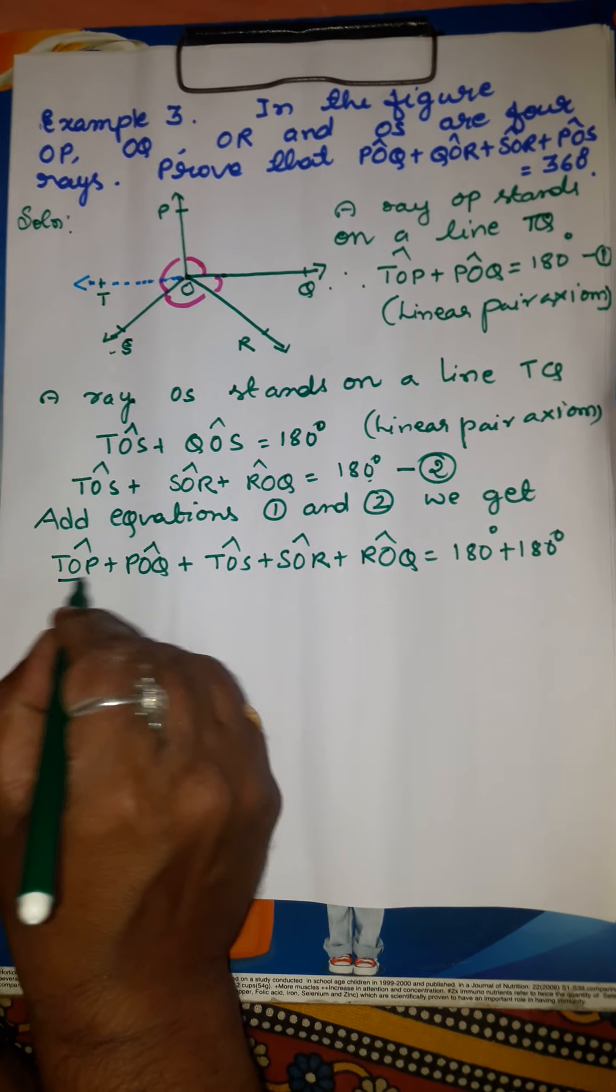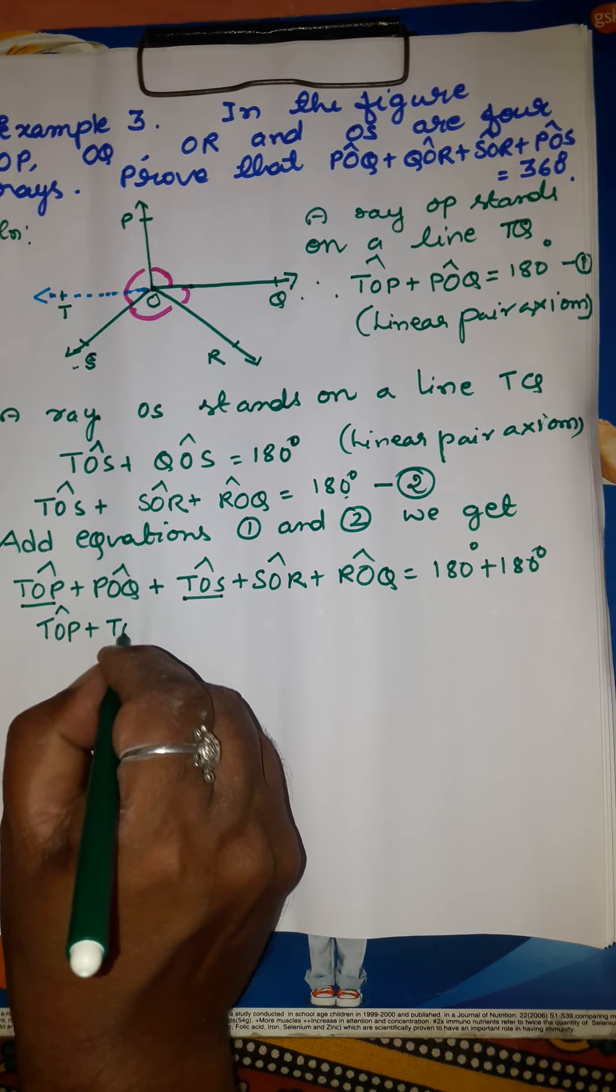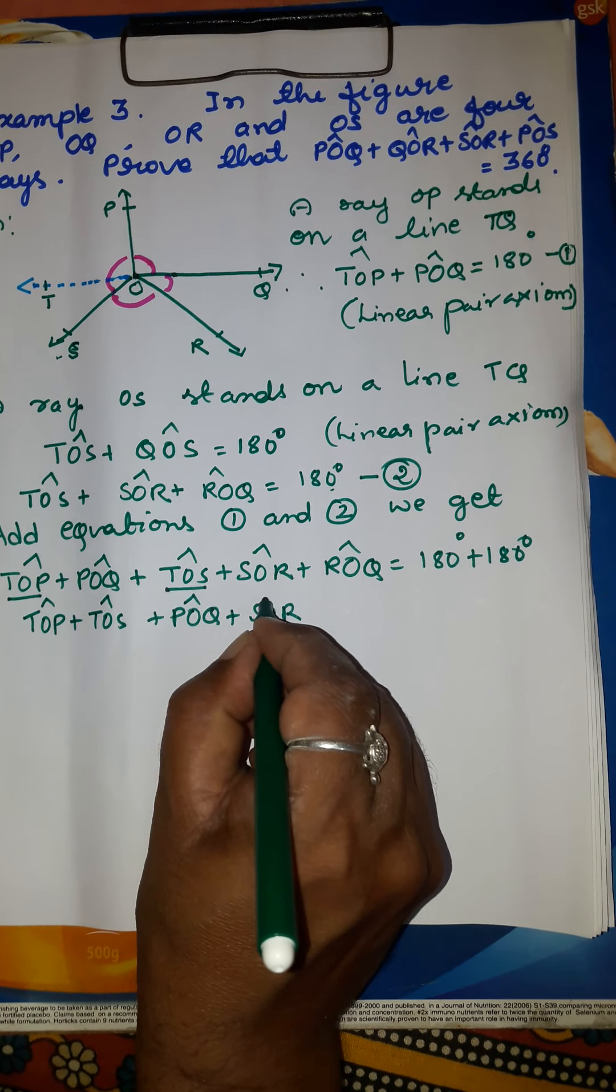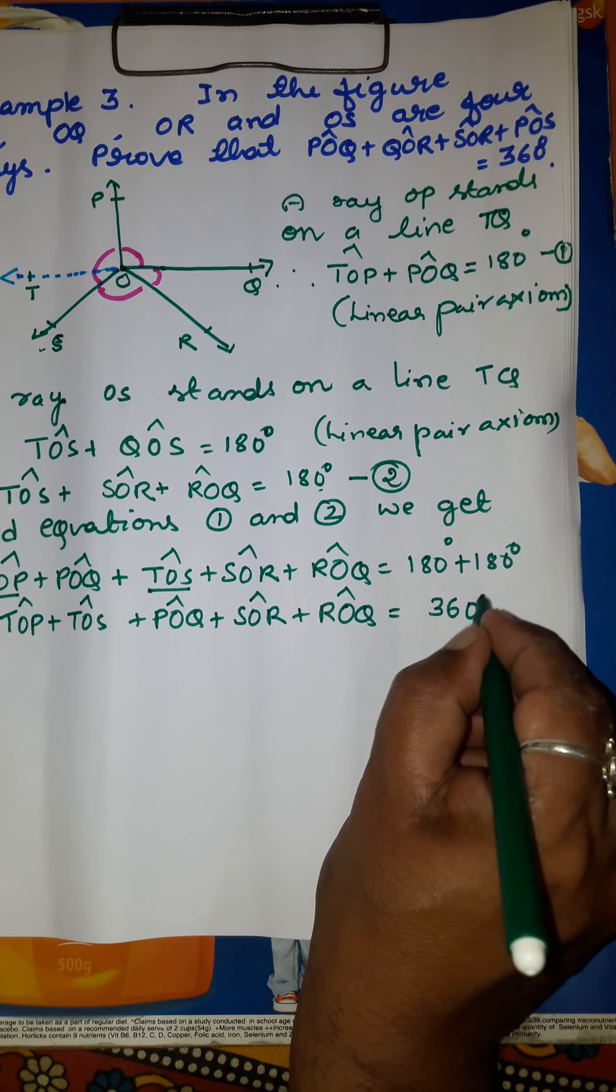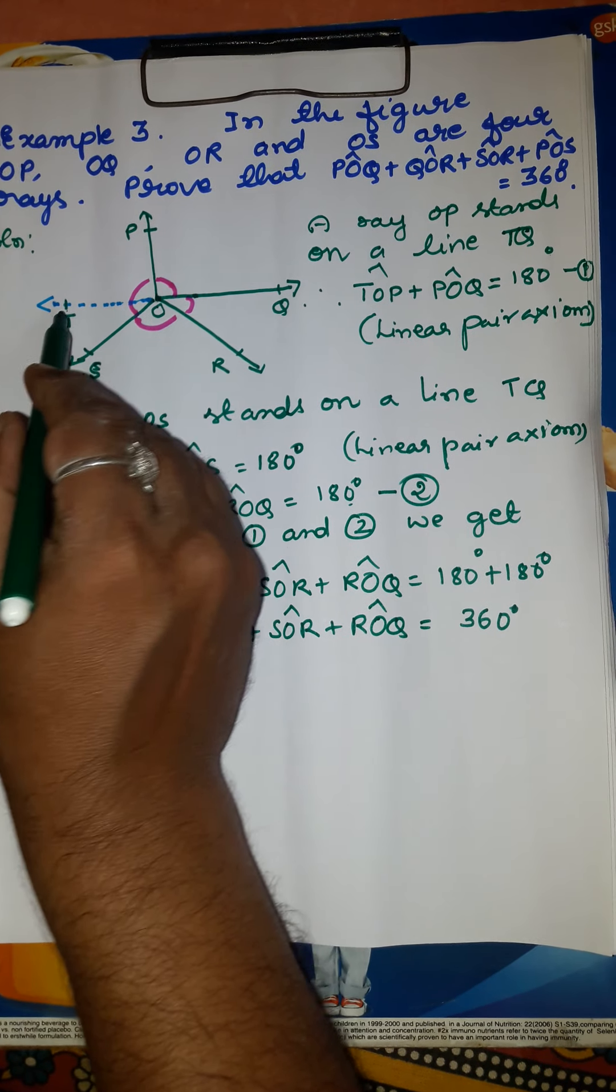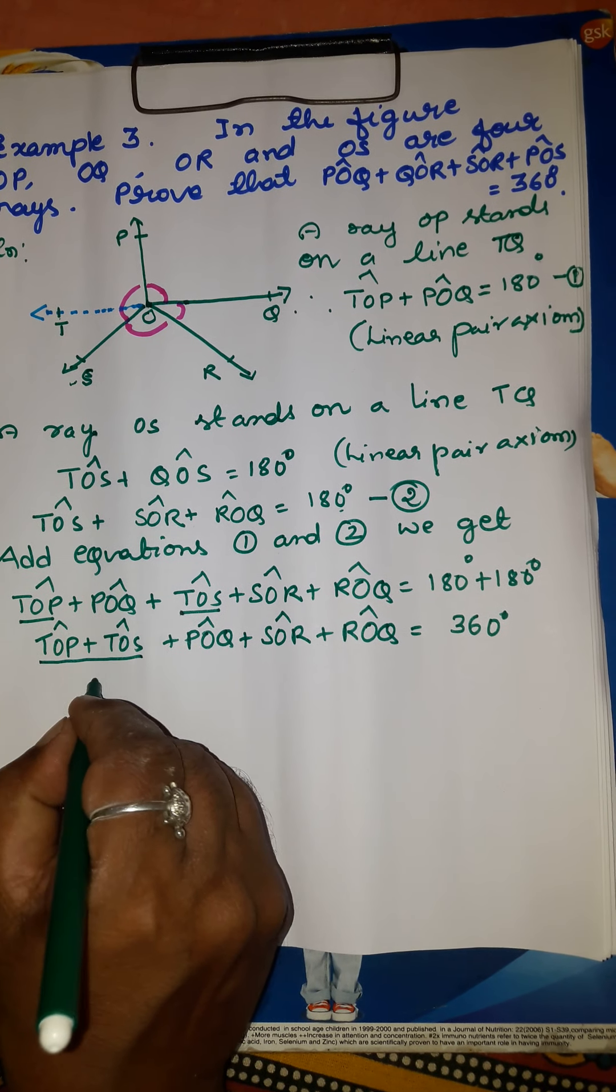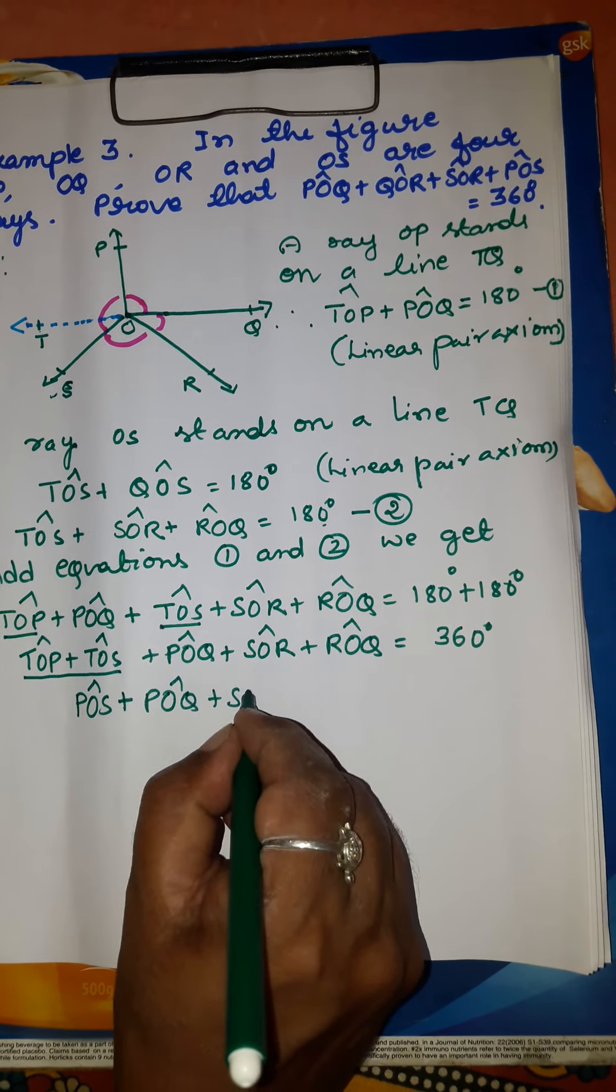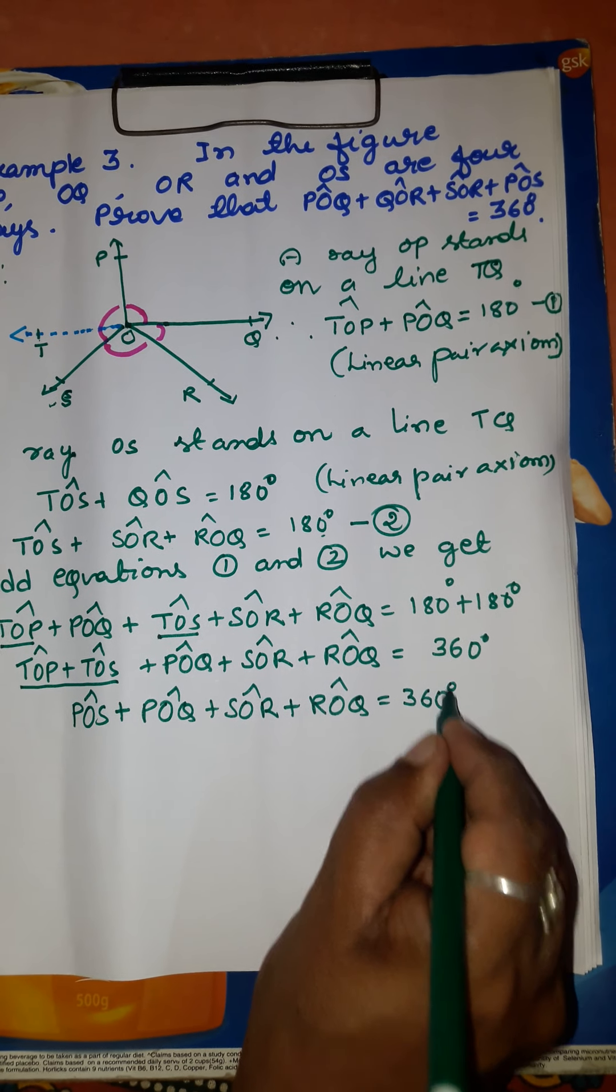Grouping angle TOP and angle TOS together gives angle POS. So angle POS plus POQ plus SOR plus ROQ equals 360 degrees. Looking at the figure, when I add angle TOP and TOS, I get angle POS.